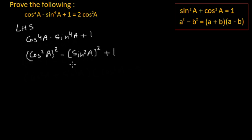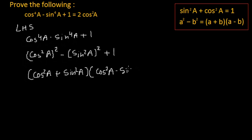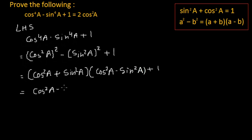Now this is in the form of a square minus b square, so it can be written as cos square a plus sin square a, multiplied by cos square a minus sin square a, because a square minus b square equals a plus b multiplied by a minus b. And cos square a plus sin square a equals 1, so this becomes 1 multiplied by cos square a minus sin square a, which gives cos square a minus sin square a.